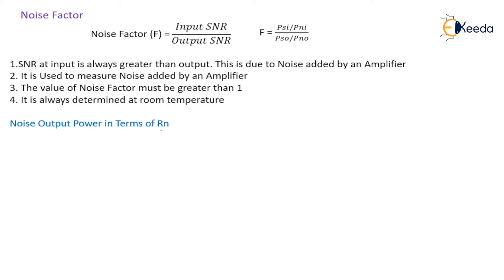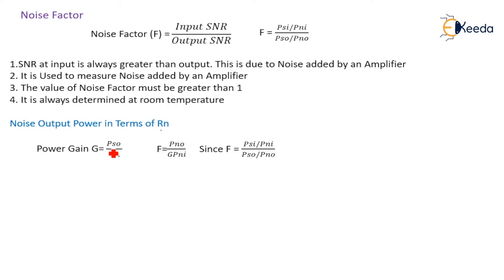We will see the noise output power in terms of RN. RN is nothing but an equivalent noise resistance of an amplifier. Power gain G is generally defined as output divided by input — that is, signal output power divided by signal input power.